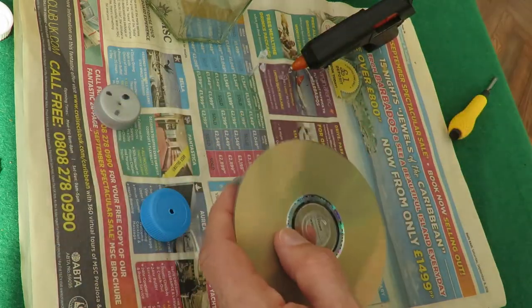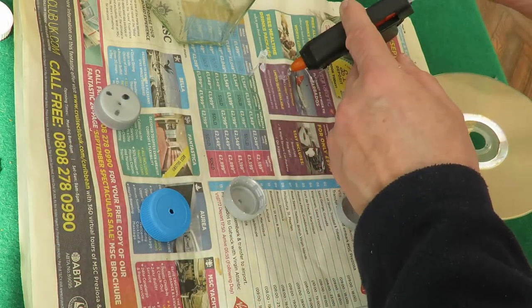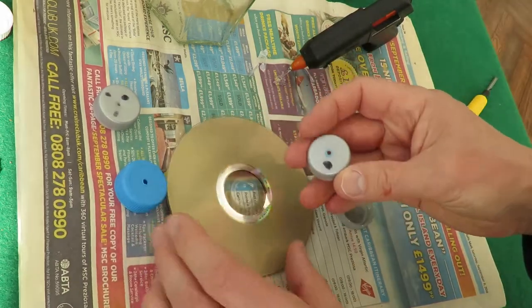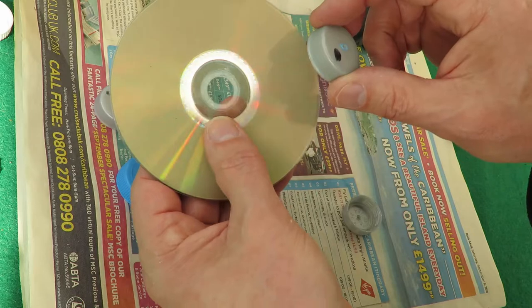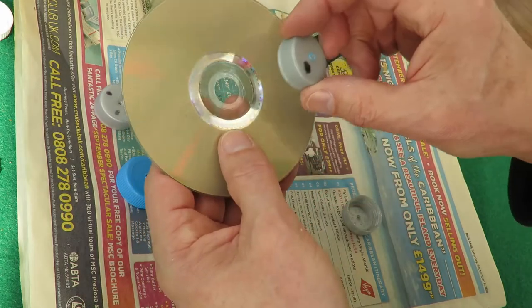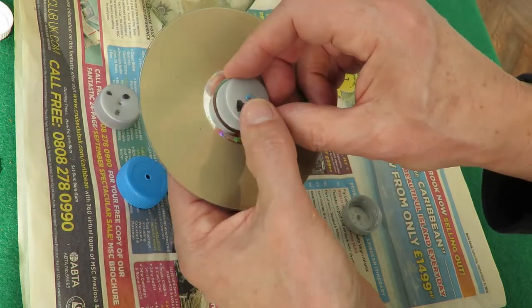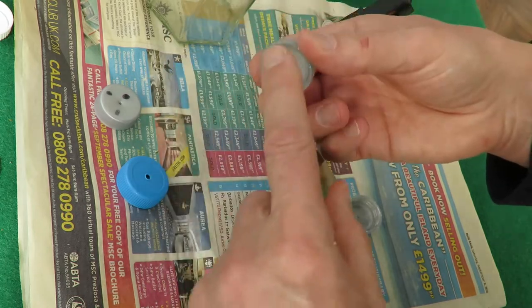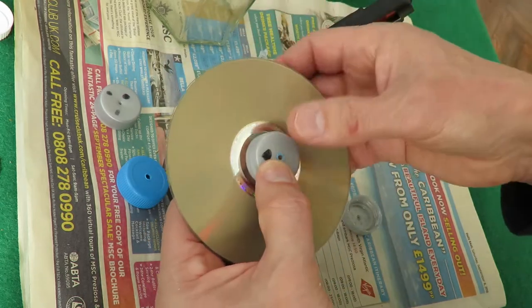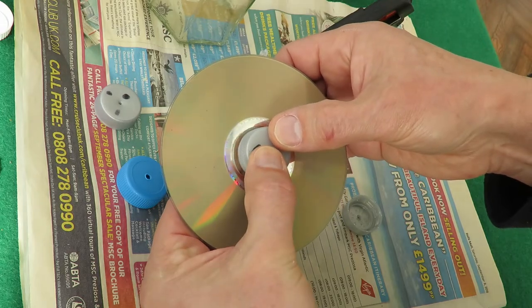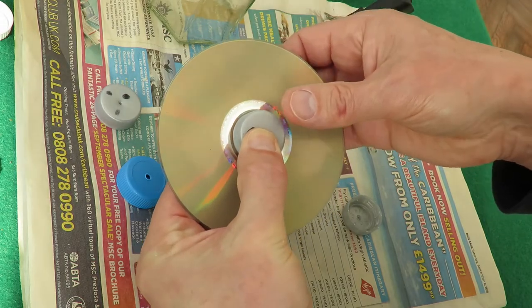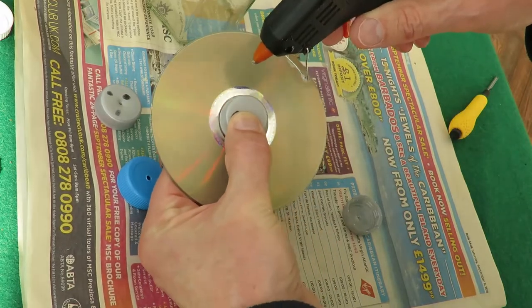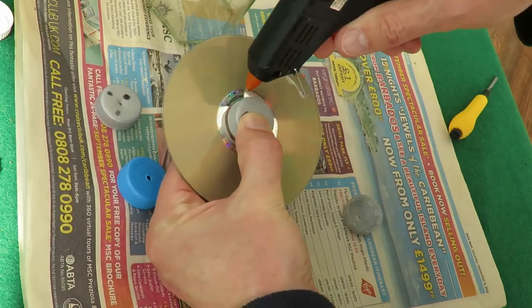And we'll glue one of these. So using the actual circles already on there as a guide, you can either put hot glue around there and put it on, or you can hold it in place and put some hot glue around the edges.